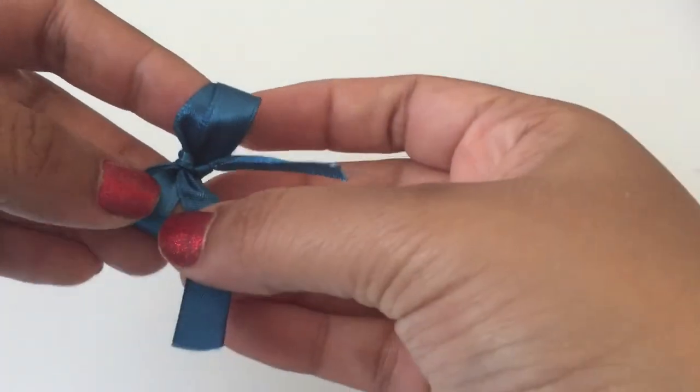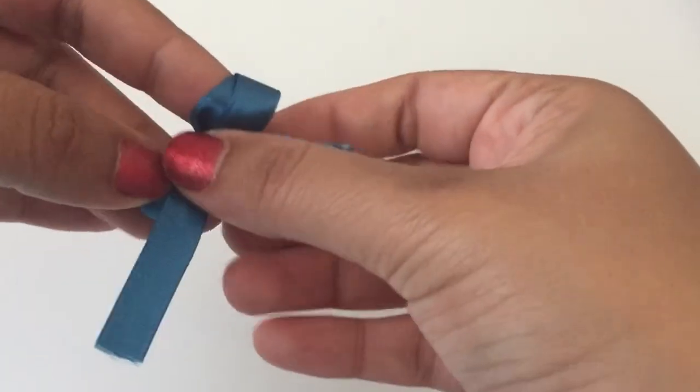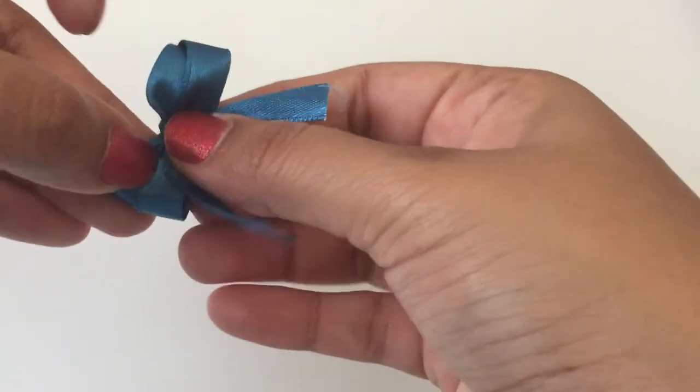Once the knot is secure, remove the bow from your fingers and adjust the loops.